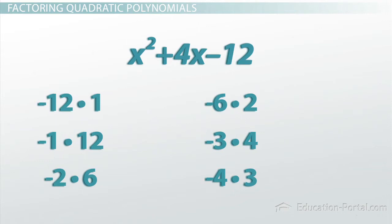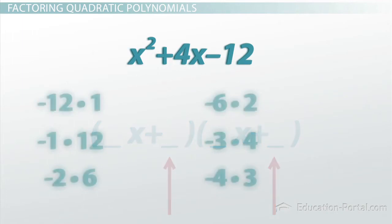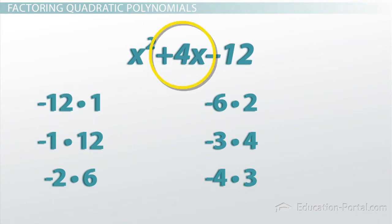So any one of these combinations could go in for the second number in each of these terms. So which one is it? Well to determine which one it is, we look at the middle term in our quadratic, this 4x.